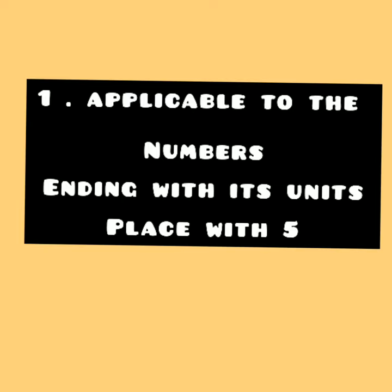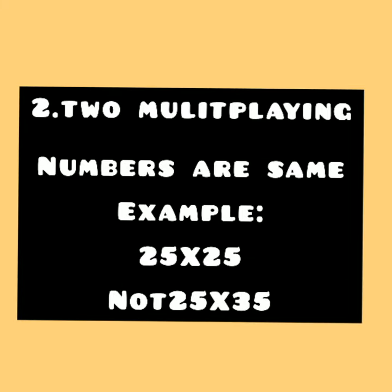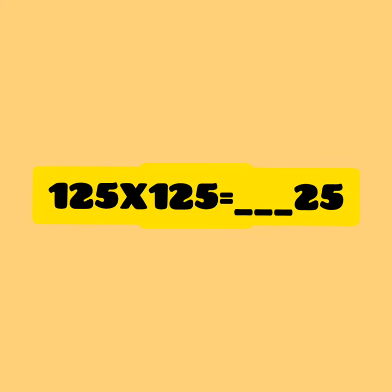Let's review the rules you've learned. When a number's last digit is 5, the last two digits of the square will be 25.